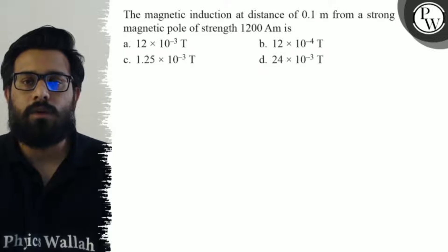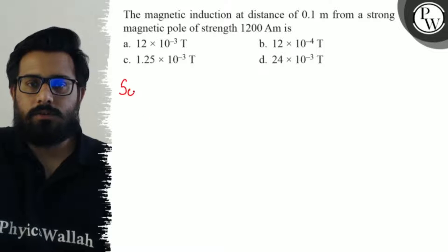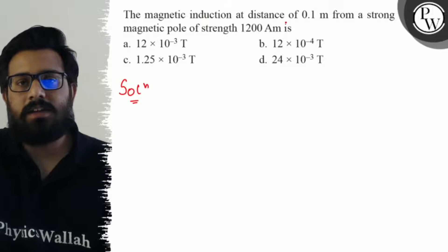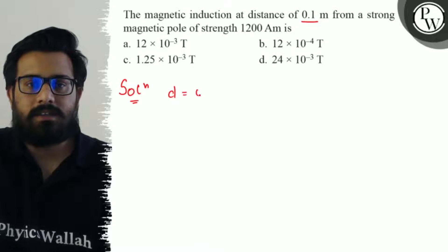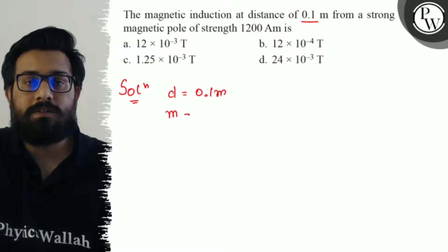So here in this question, it is said that the magnetic induction at a distance of 0.1 meter from a strong magnetic pole of strength 1200 ampere meter needs to be found.